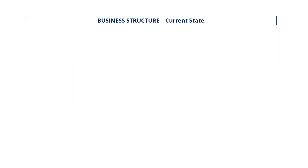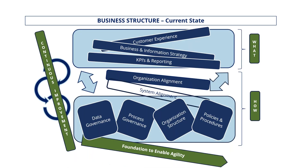This next slide is what we normally see when we walk into an organization — this may connect with you or your past organizations. At the top you have the customer experience kind of defined, business information strategy kind of there, KPIs and reporting — that's the 'what.' And then you have the 'how': data governance where everyone seems to have access and can update files, and they're complaining that reports aren't right. Processes — Sue does it one way, Bob does it another way. This typically represents an organization that is very siloed.